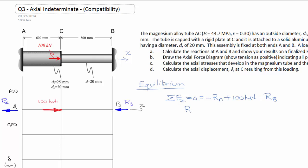I'm just going to reorder that equation in terms of RA for how I want to use it later. That's 100 kilonewtons minus RB, and I'm going to label that equation 1.